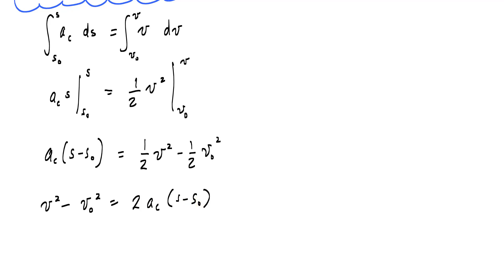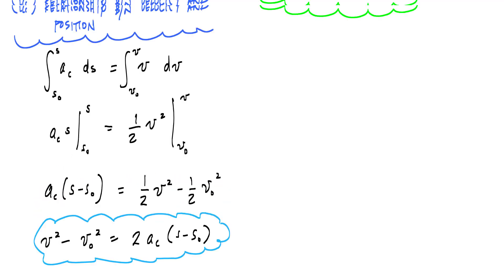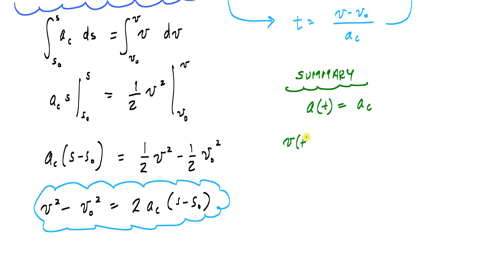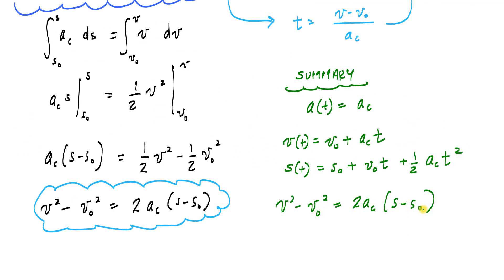You can also obtain that last relationship without integrating — if you take v = v0 + AC·t, solve for time as t = (v − v0)/AC, and substitute into the position function, you end up with the exact same result. So these are the three popular equations for constant acceleration: velocity with respect to time, position with respect to time, and the relationship between velocity and position in 1D motion.